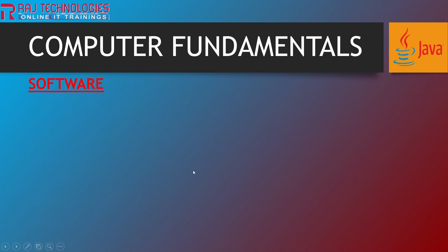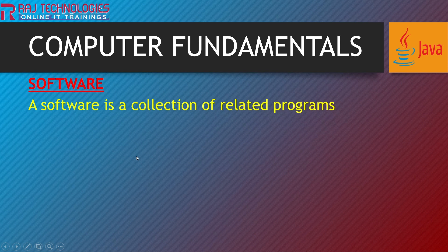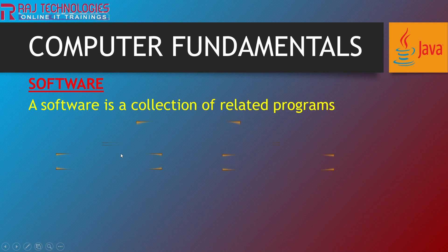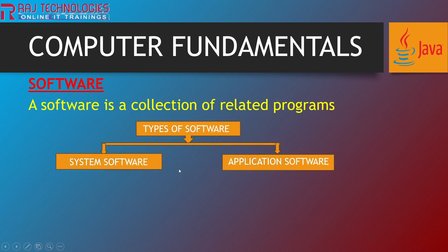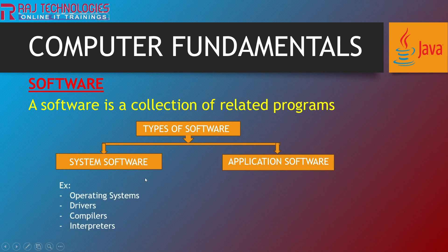The next definition is software. A software is a collection of related programs. Once we write programs, in order to make it a software, we have to write so many programs — that collection of related programs only we call it as software. This software is of two types: system software and application software. The examples of system software are operating systems like Windows, Mac, and Linux. These come under system software. Also the drivers.